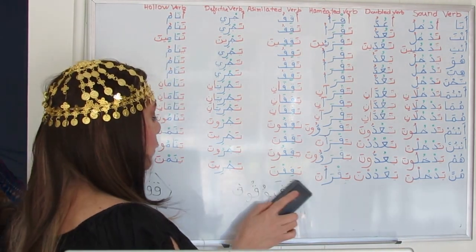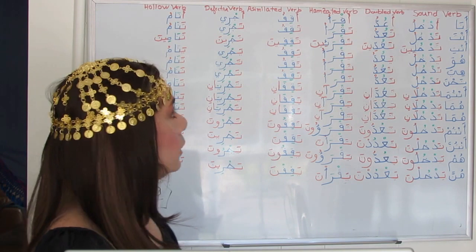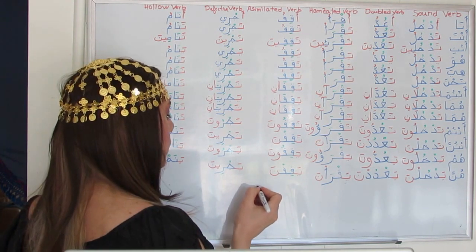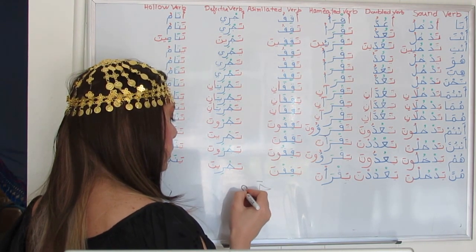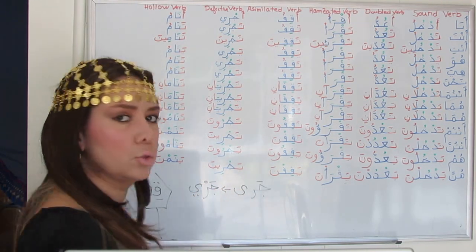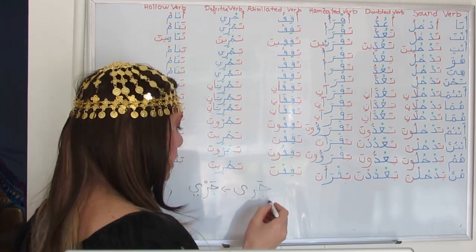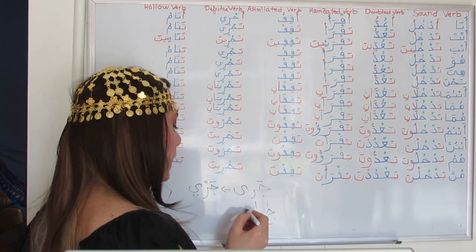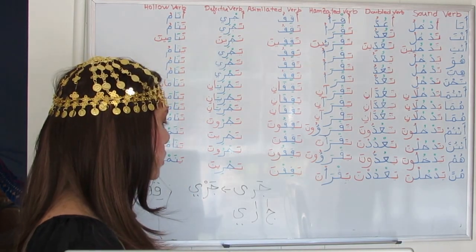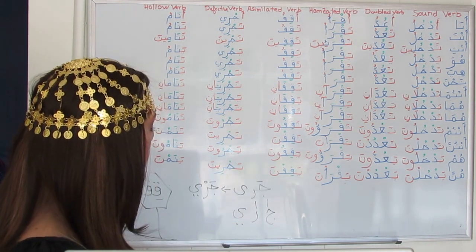The defective verb has a weak letter at the end of the root. Here we have the verb 'jara' — to run. The verbal noun is 'jari' — running. The root is Jeem, Ra, Ya — because Alif cannot be part of a root, never. Weak letters may be Waw or Ya.